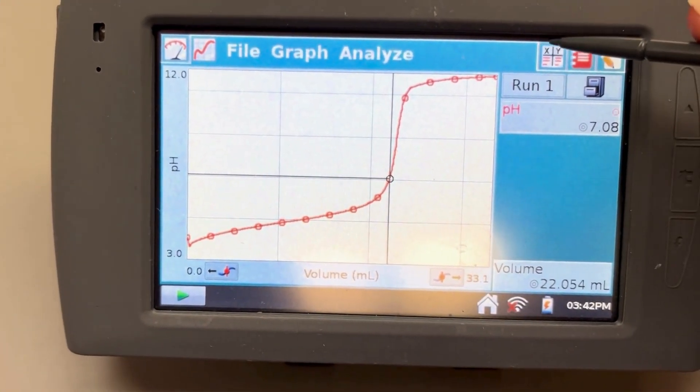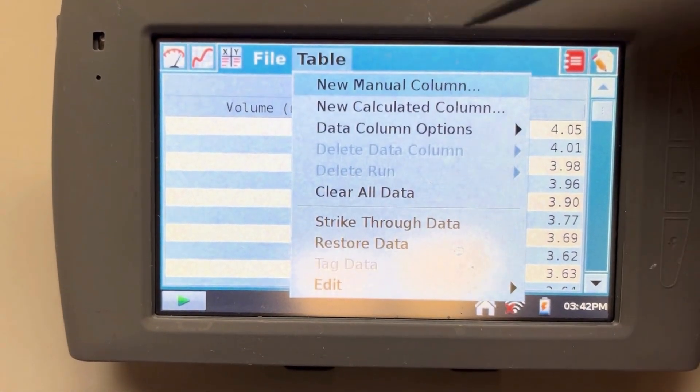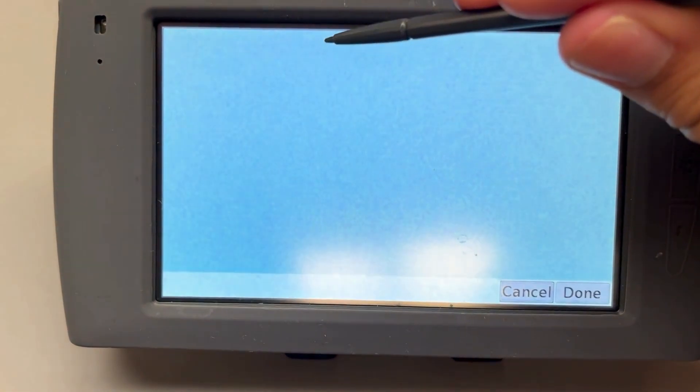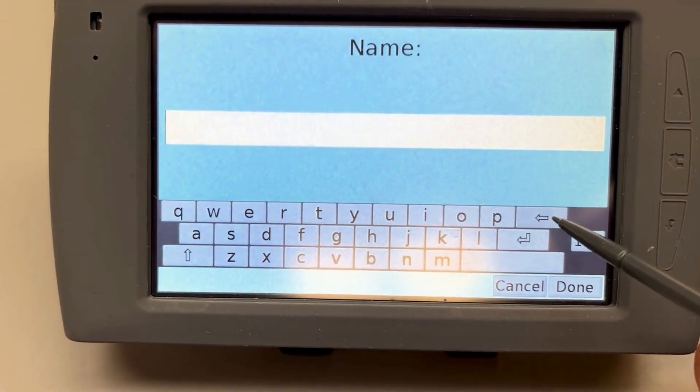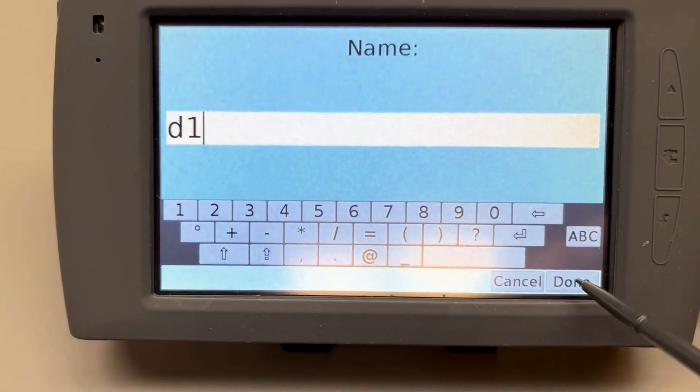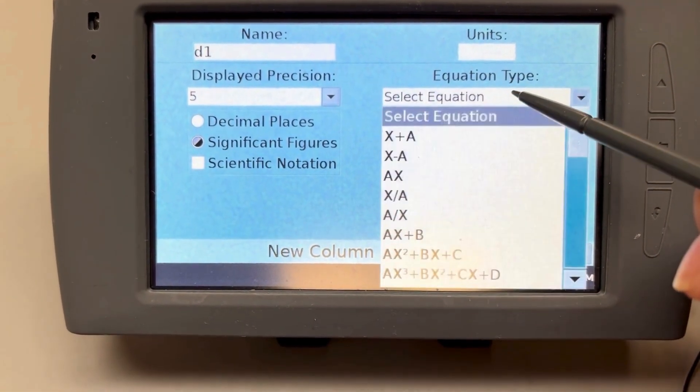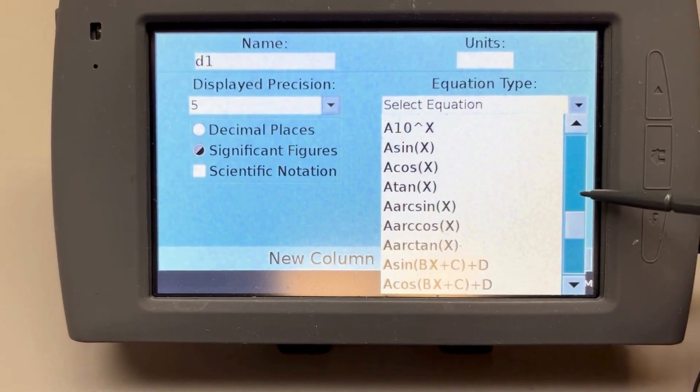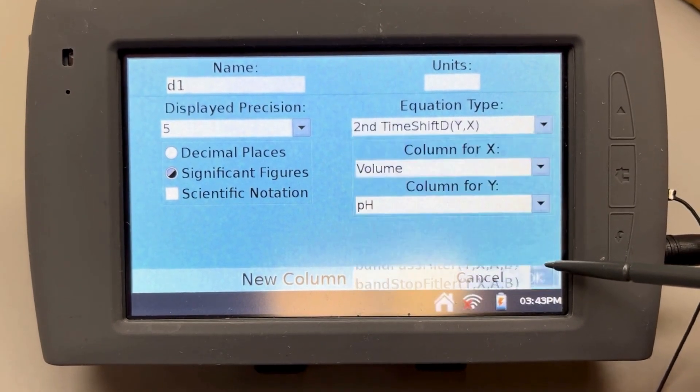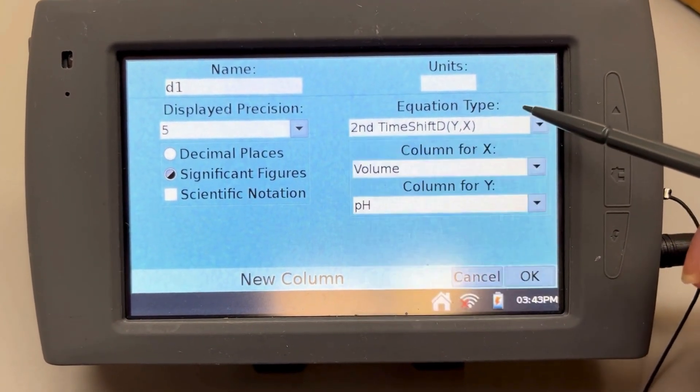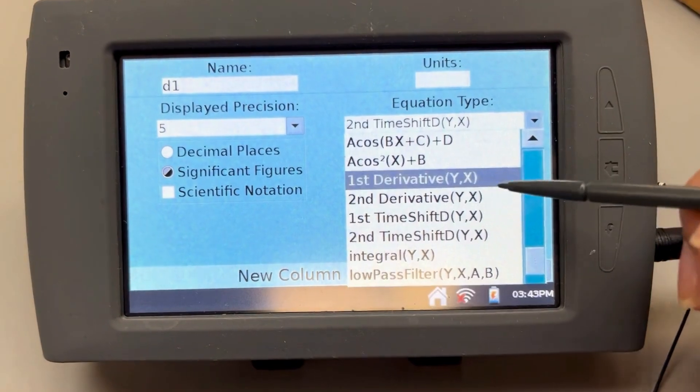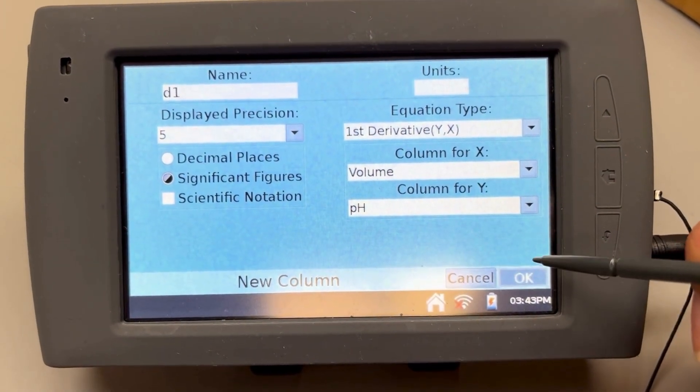To find your first derivative, click table, new calculated column, and change your name to D1 for derivative one. Press done, then go to equation type and scroll down until you find first derivative. Then press ok.